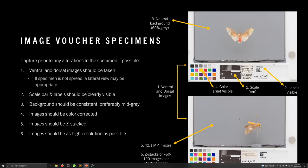Ideally the images would be color-corrected with some kind of color target, as you can see in this image. I've found that cameras often produce images that are way off in terms of color, so having a color target to correct color reproduction problems is really nice.